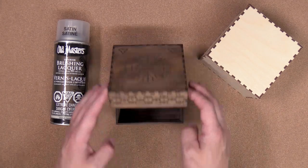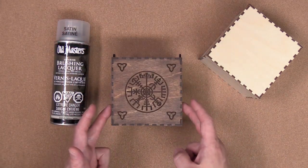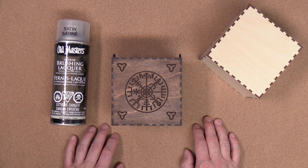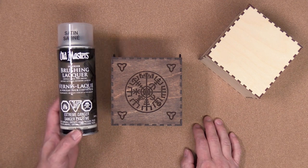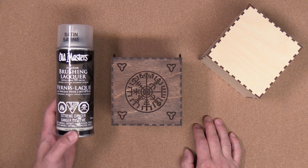Once the boxes are all assembled and the CA glue is dried, I'm going to go ahead and add a finish to these boxes. I'll be using a spray-on lacquer to finish my boxes from Old Master and it'll be in a satin. You can of course use any finish that you prefer.